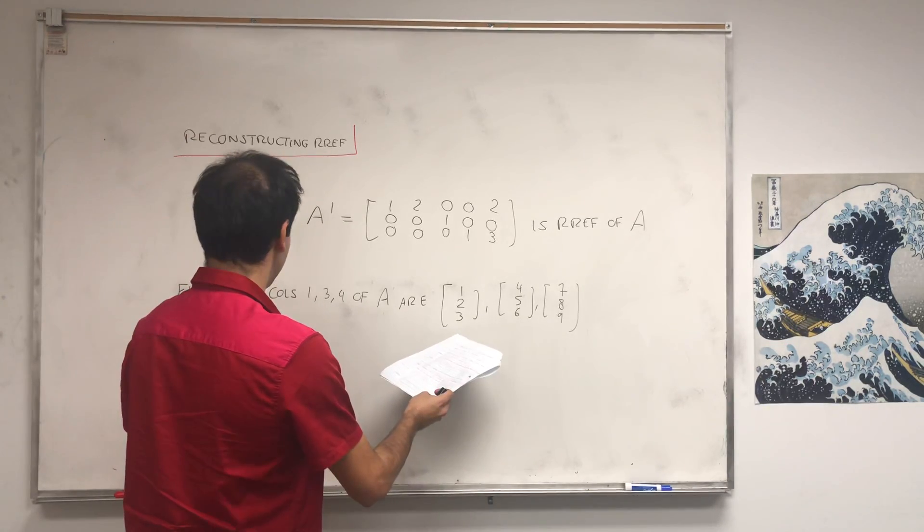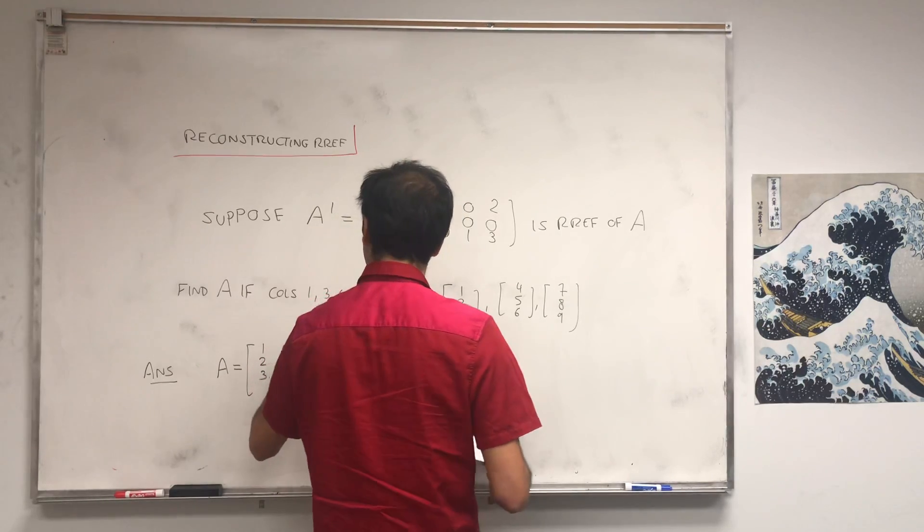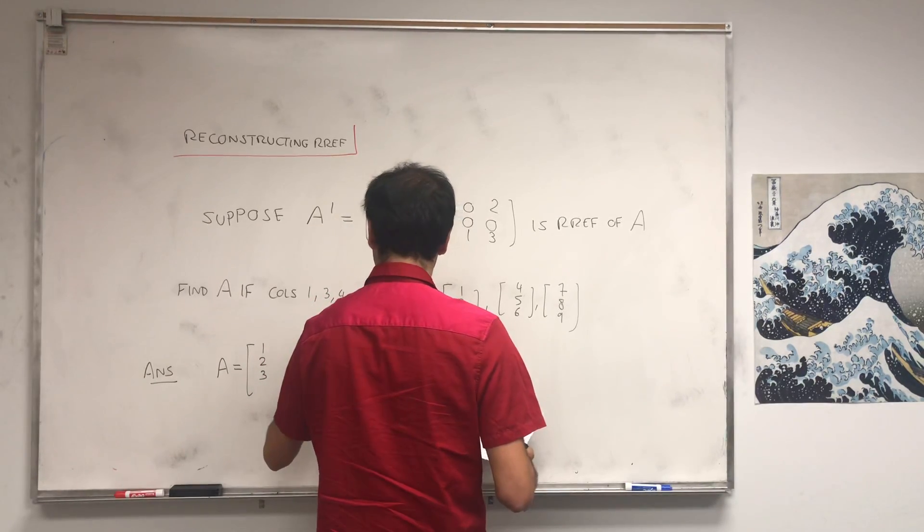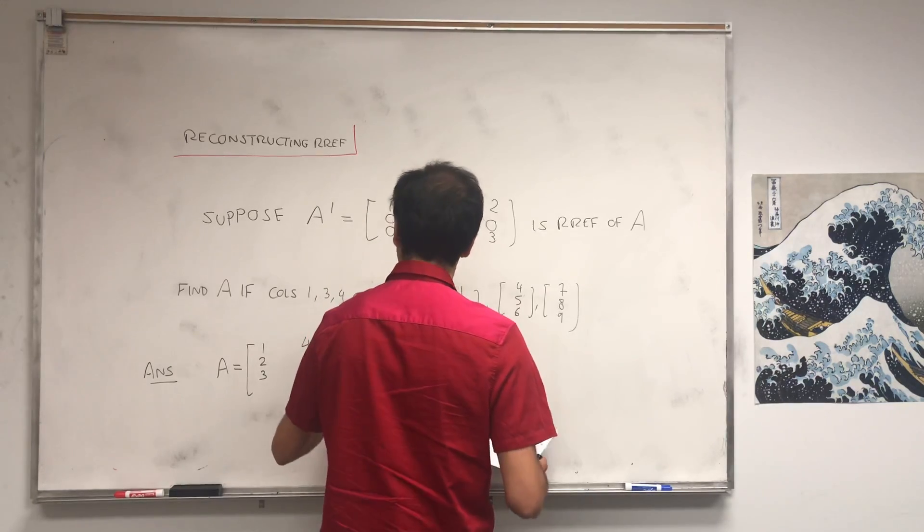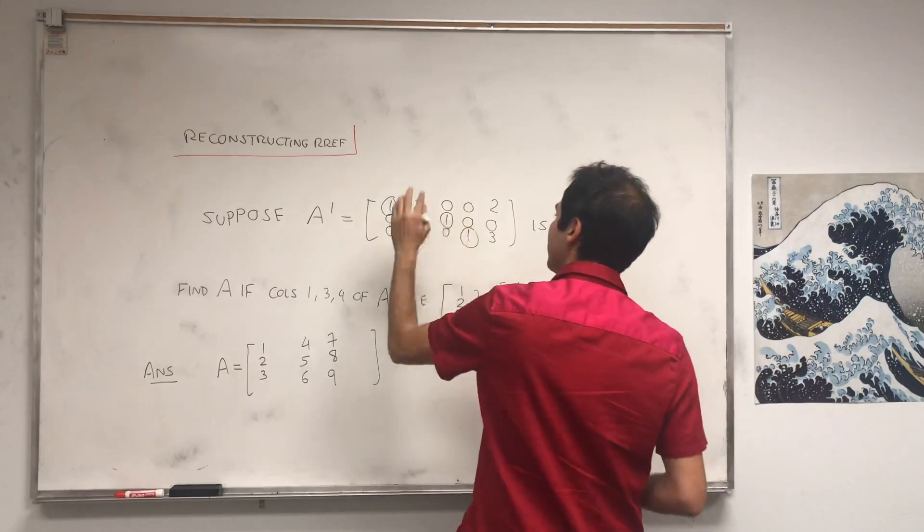So what do we know? Well luckily we have some answers. We know that A is the matrix where the first column is [1, 2, 3], the second column we don't know yet, then we have [4, 5, 6] and [7, 8, 9] and something else. And again, the reason I chose 1, 3, and 4 is because those are the pivot columns.